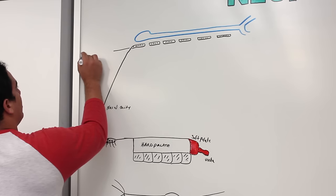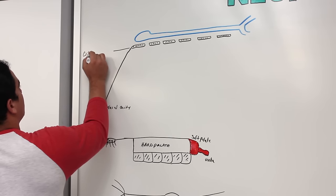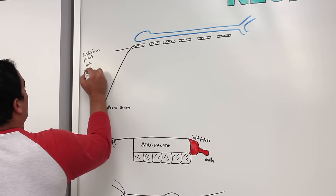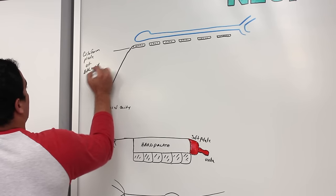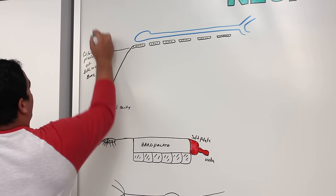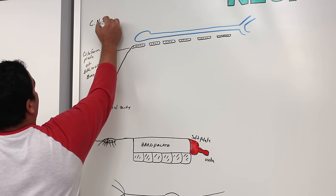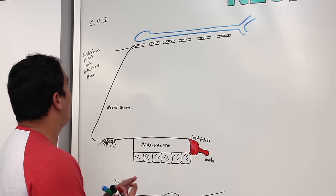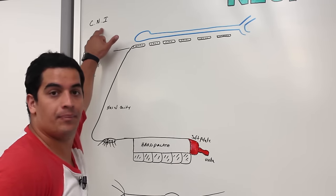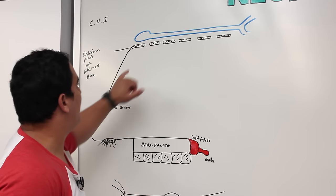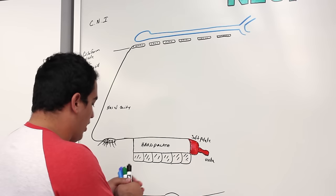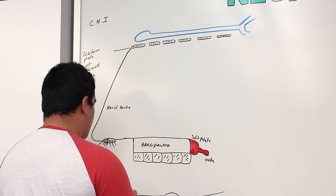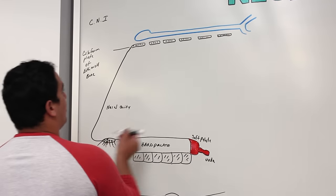And up here again is the cribriform plate of the ethmoid bone. With cranial nerve 1, one thing we want to understand is where you would actually find it. First, we need to look inside — right here at the roof of the nasal cavity, there are the specialized olfactory neurons.